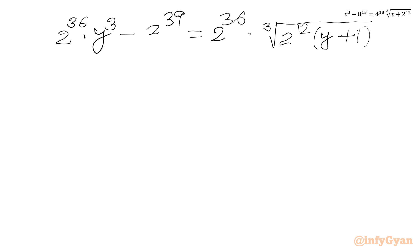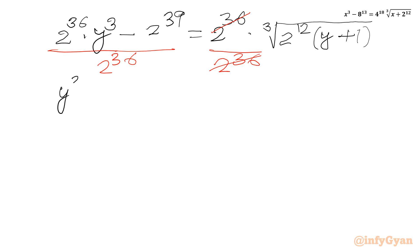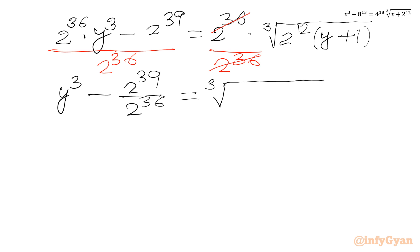Now we divide our equation by 2^36. On the left side we get y³ − 2^(39−36) = y³ − 2³. On the right side, using the cube root, ∛(2^12) = 2^(12/3) = 2^4, giving us cube root of (y + 1).